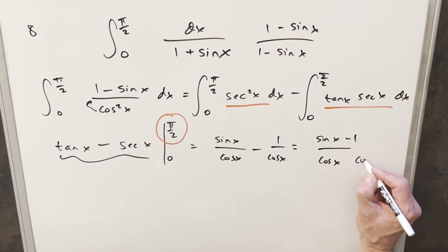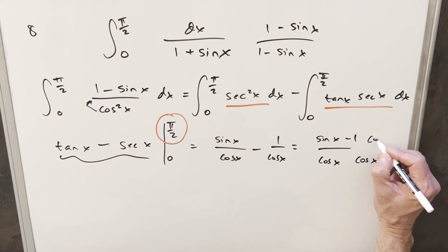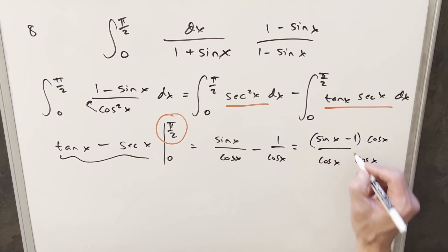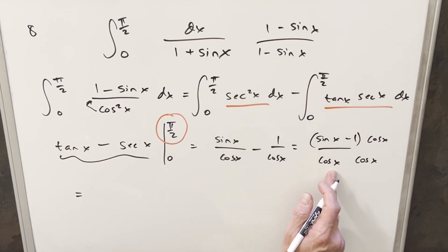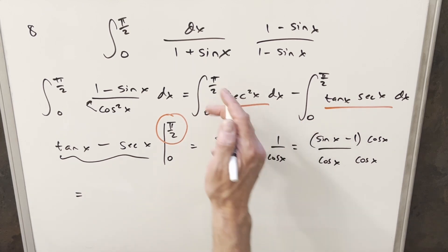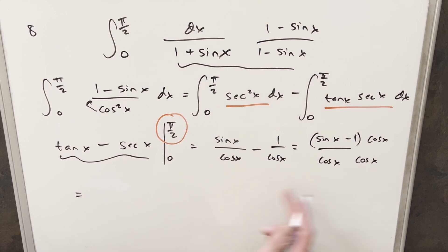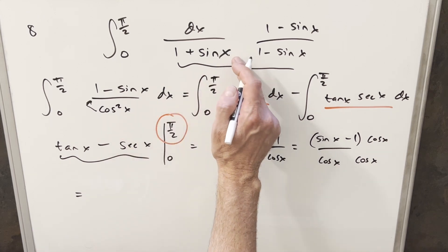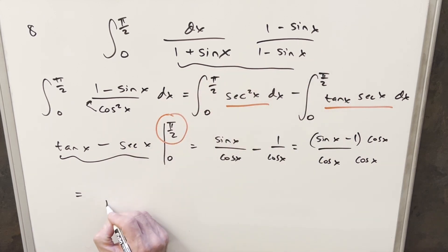And then what I'm going to do from here is I'm actually going to multiply by cosine x in the numerator and denominator. And this is going to give me cosine squared x. And what's going to allow me to do is kind of undo what we did right here. Because cosine squared x, I can write as 1 plus sine x times 1 minus sine x.